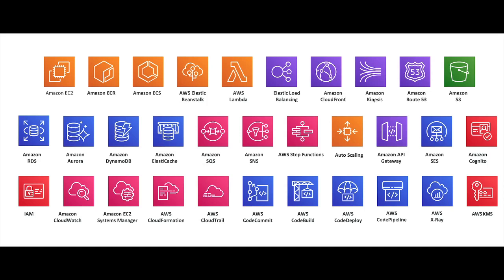AWS Kinesis is for streaming, Route 53 provides DNS and routing for your web app, DynamoDB is a NoSQL database, RDS lets you create Oracle, Aurora, MySQL, or Postgres databases. ElastiCache is a managed Redis service. SQS is a managed queuing service similar to RabbitMQ. SNS (Simple Notification Service) lets you send messages to email, HTTP endpoints, or queues by publishing to a topic.